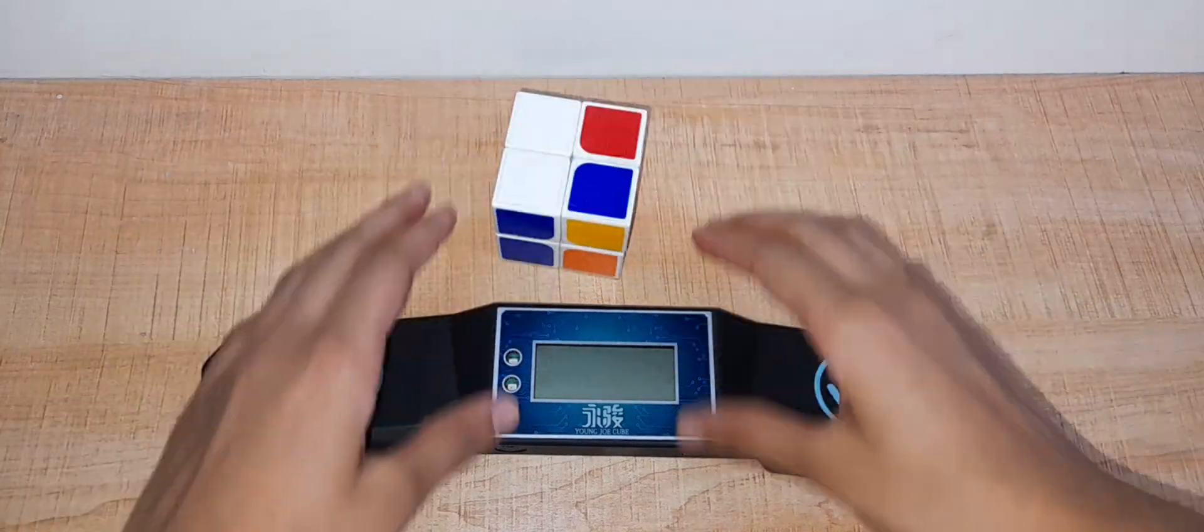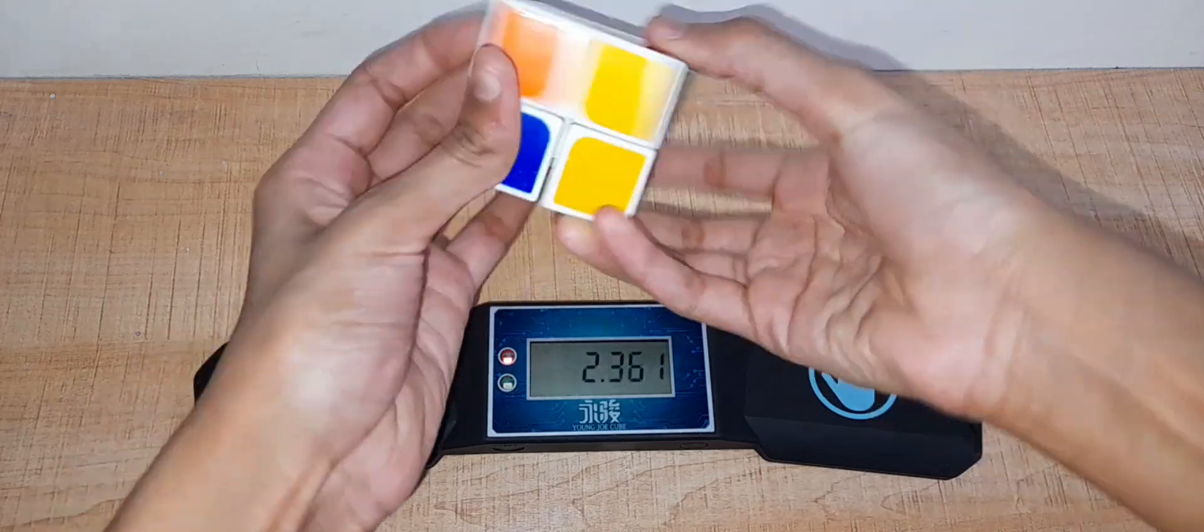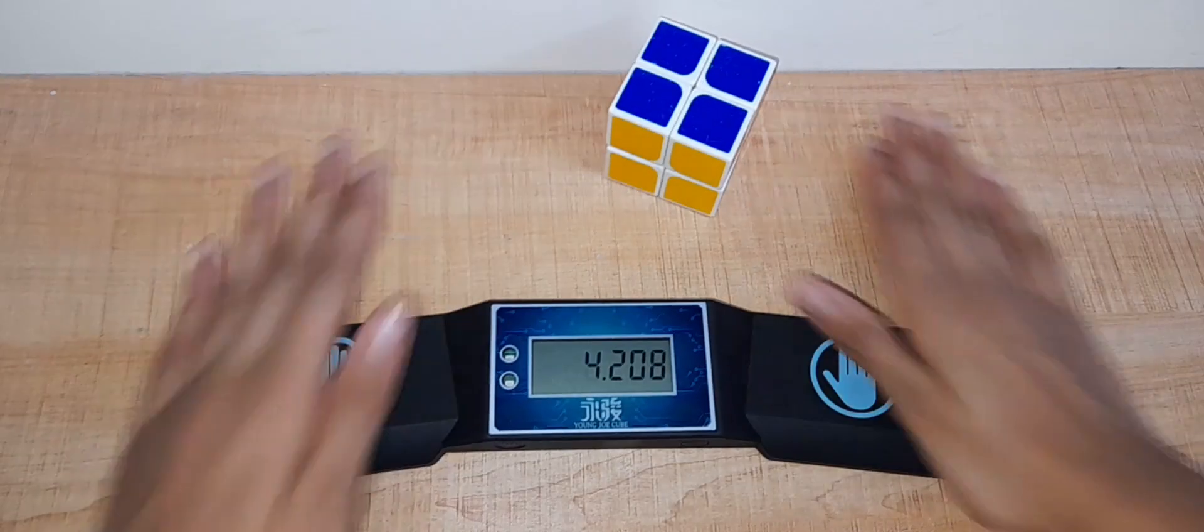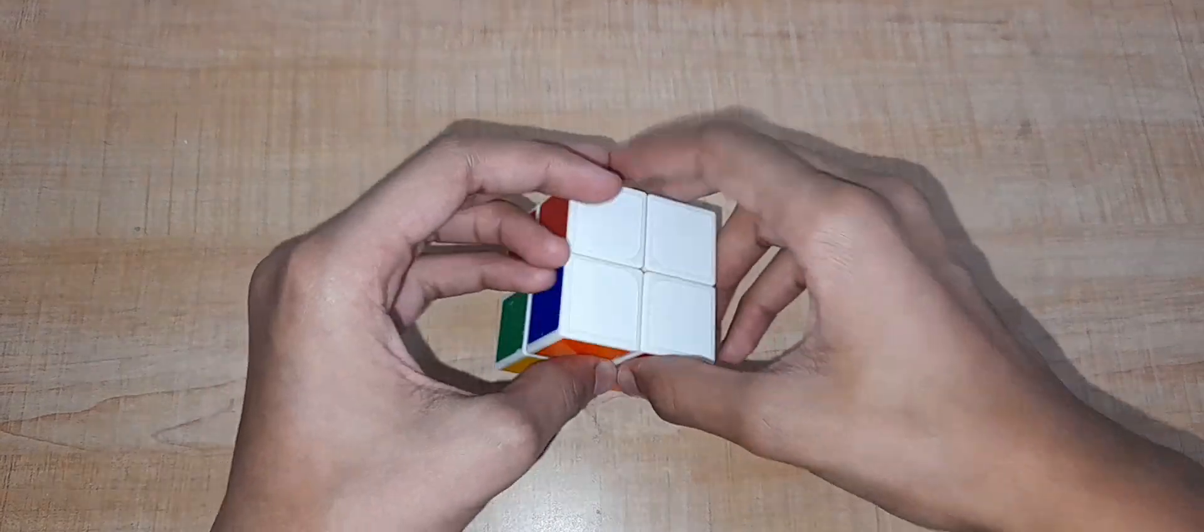Hey guys, in this video we'll teach you to solve a 2x2 Rubik's cube with the Ortega method. With this method you can be sub-five. You should be able to solve the first side easily.